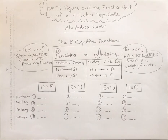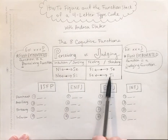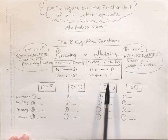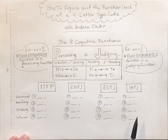There are eight cognitive functions, as you can see here, but we only have a preference for four of them. So it's important to understand the order that they're arranged so that we can understand the 16 personality types a little better.